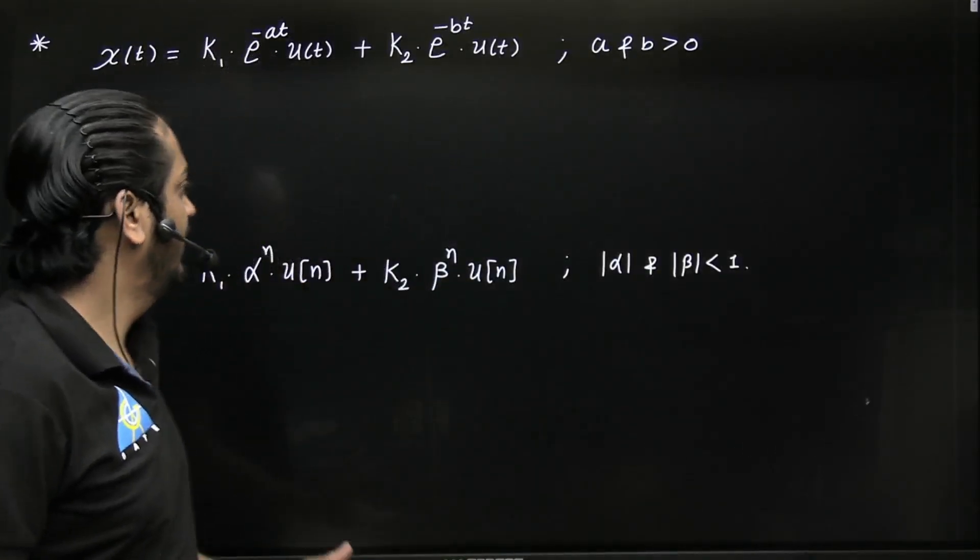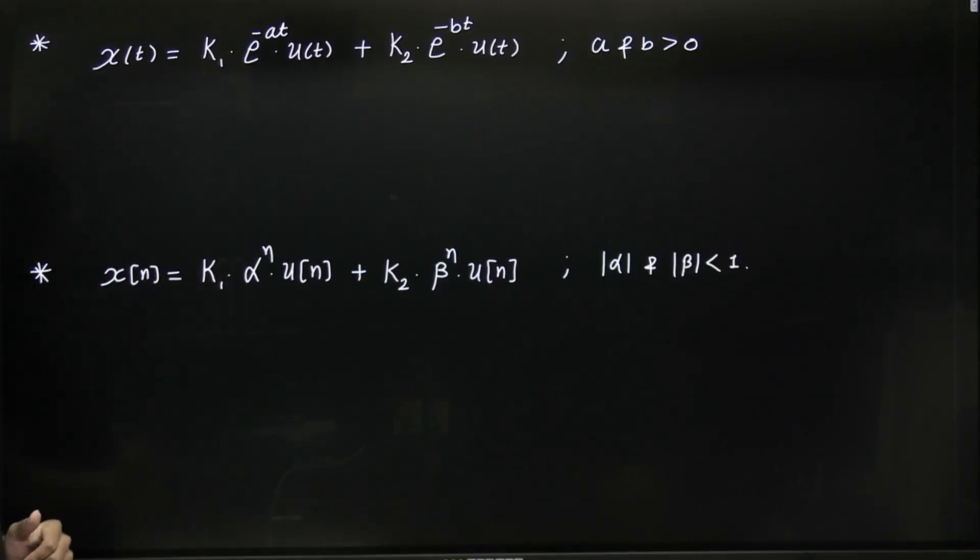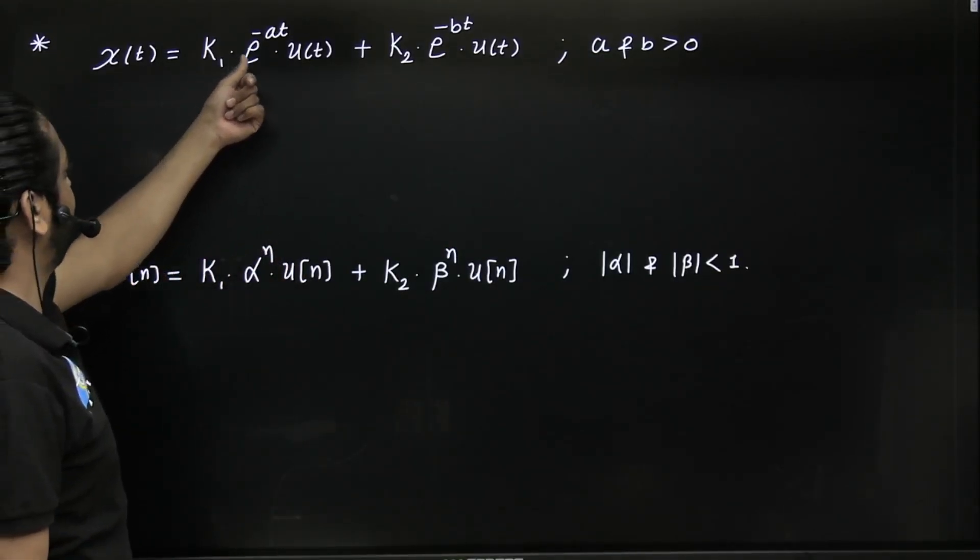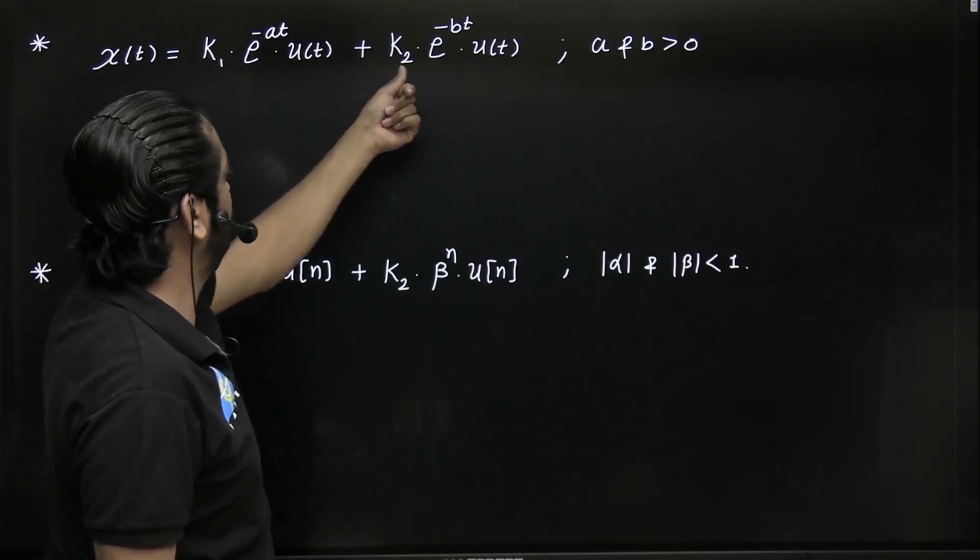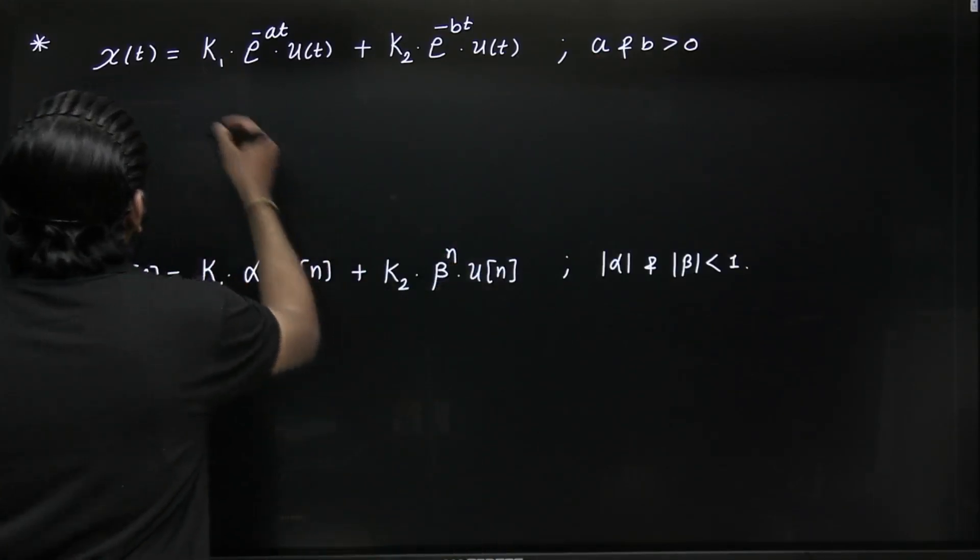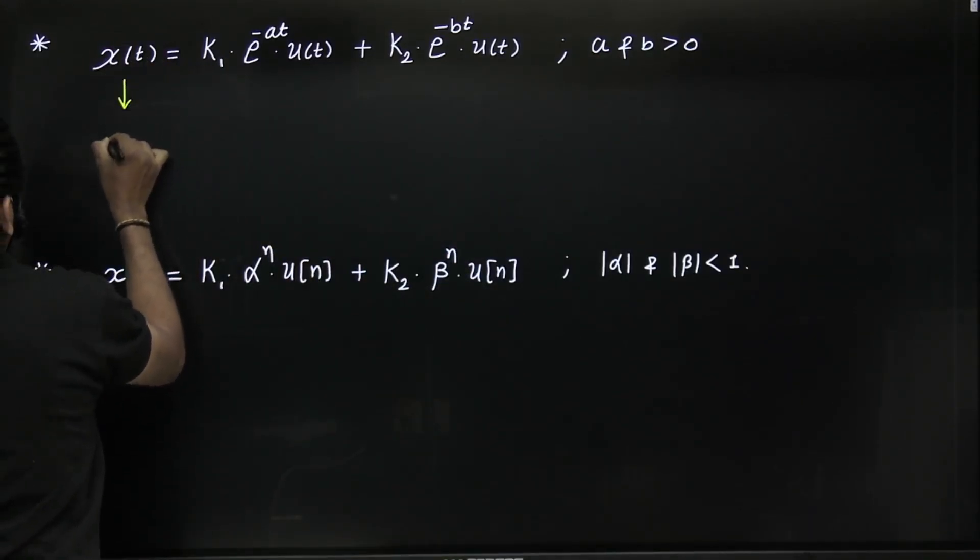Do you know how to find energy of these signals using a shortcut? Here I am providing you a shortcut. Suppose x(t) = k₁ e^(-at) u(t) + k₂ e^(-bt) u(t), where a and b both are positive. Then the energy of this signal